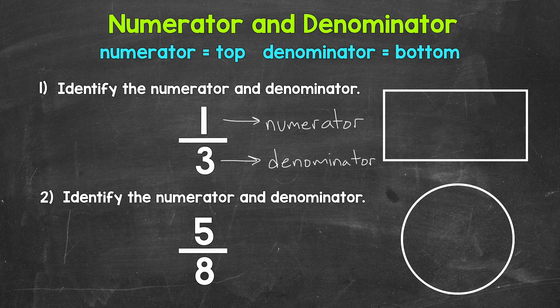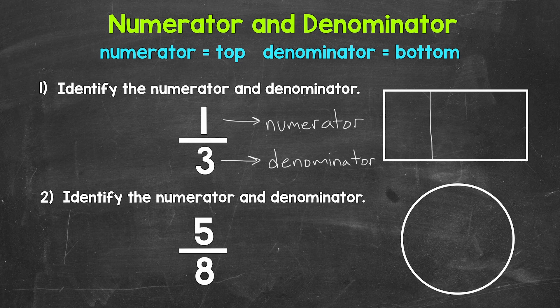Now what do these numbers mean? What does this fraction mean? We will start with the denominator. The denominator tells us the total number of equal parts a whole has been divided into. For 1 third, 3 is our denominator, so the whole needs to be divided into 3 equal parts. We will use this rectangle off to the side for our whole — we don't have to use a rectangle, that's just the shape we are using for this example. So 1, 2, 3 — this is what we call thirds, 3 equal parts.